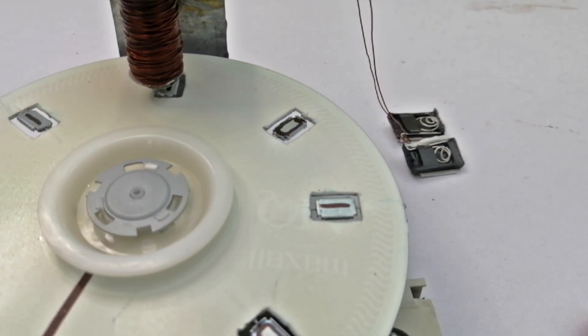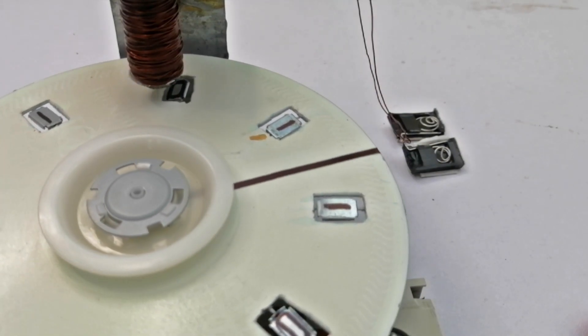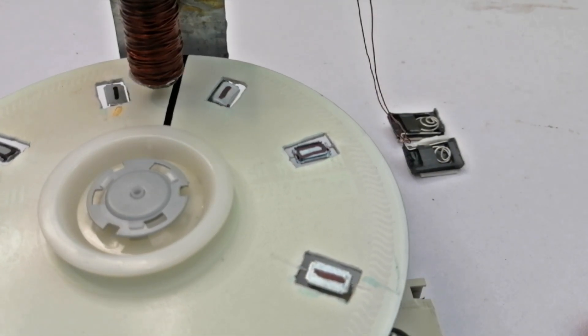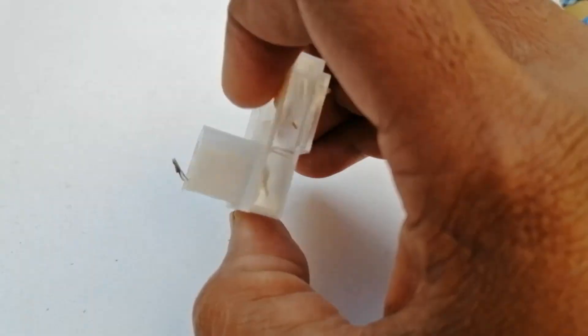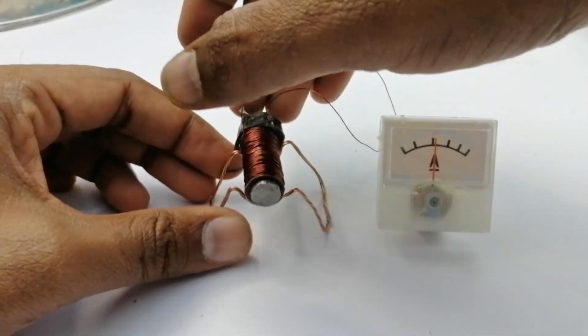But reading data from it is even more interesting. Let's understand how to read data from hard disk. This is a voltmeter we have. We connect it with the same coil head.